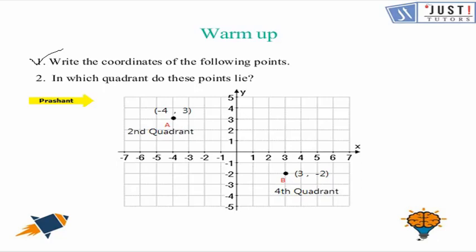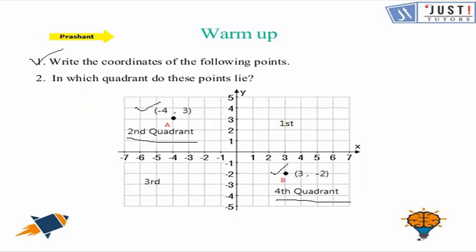The first question is: write the coordinates of the following points. Point A coordinate is minus 4, 3, and point B coordinate is 3, minus 2. Point A is in the second quadrant, B is in the fourth quadrant. Other points are in the first, second, and third quadrants. Now let's go ahead and see some questions about plotting.